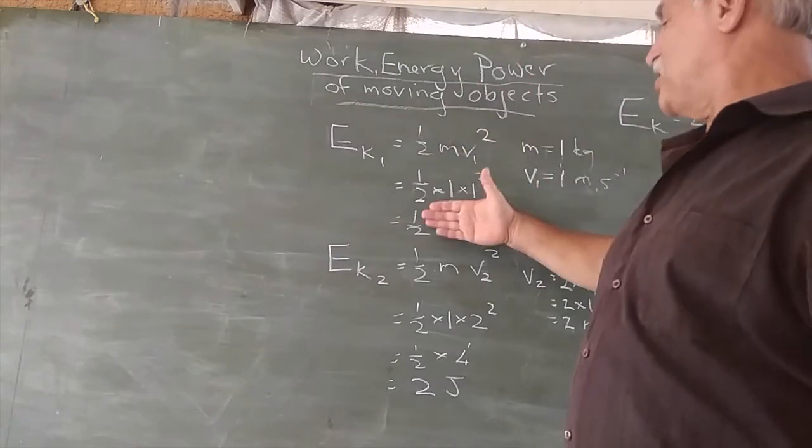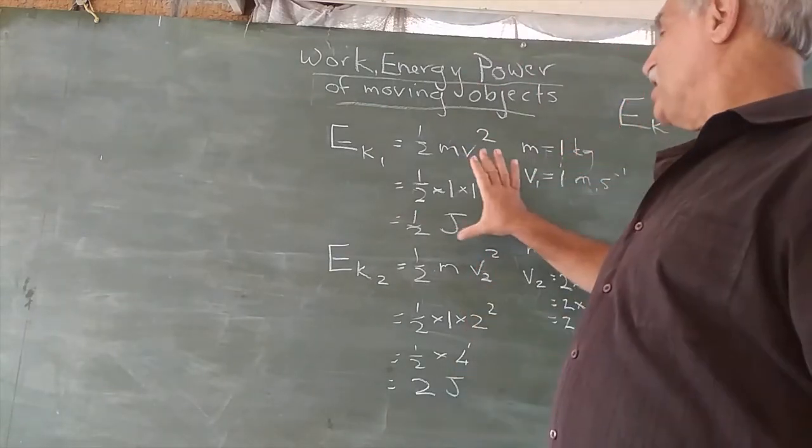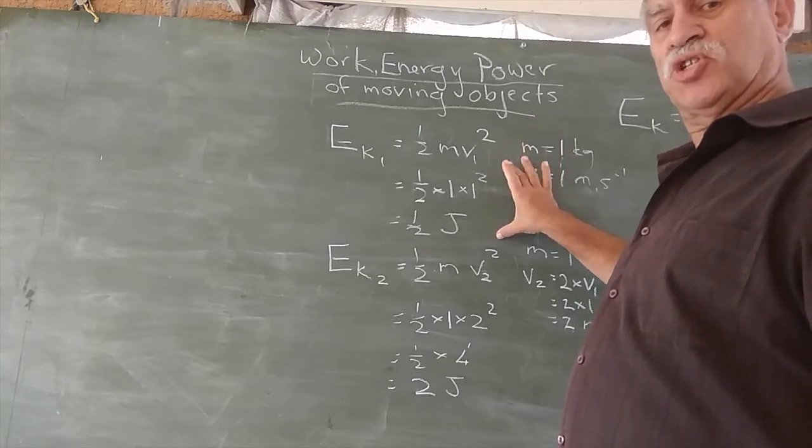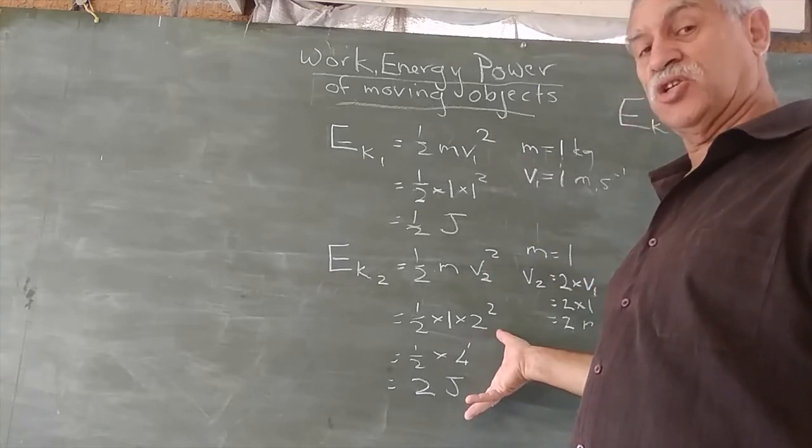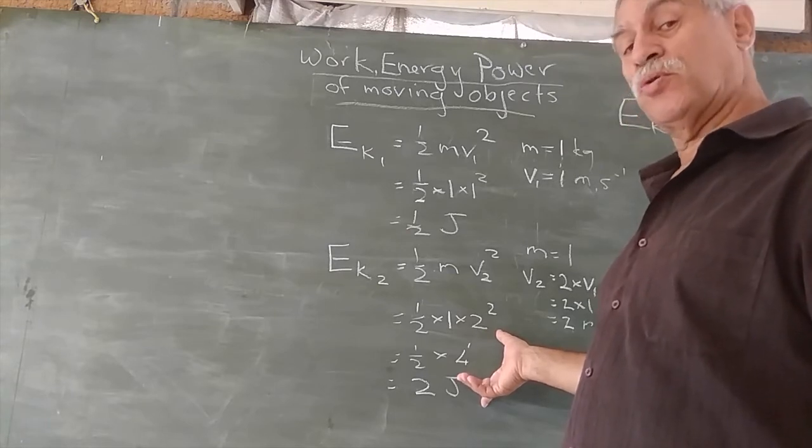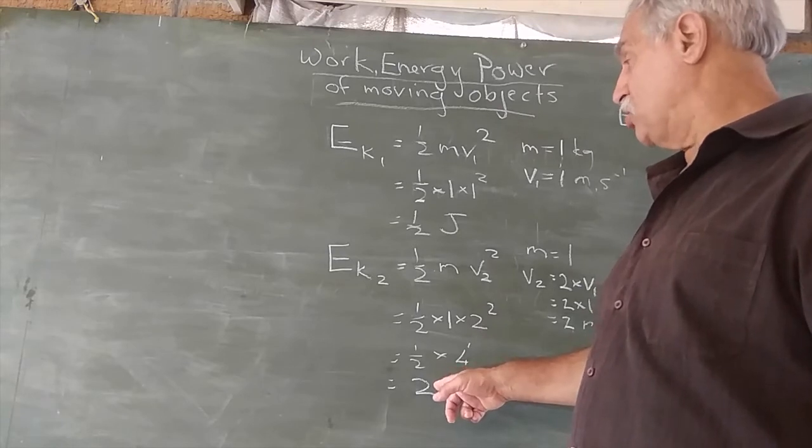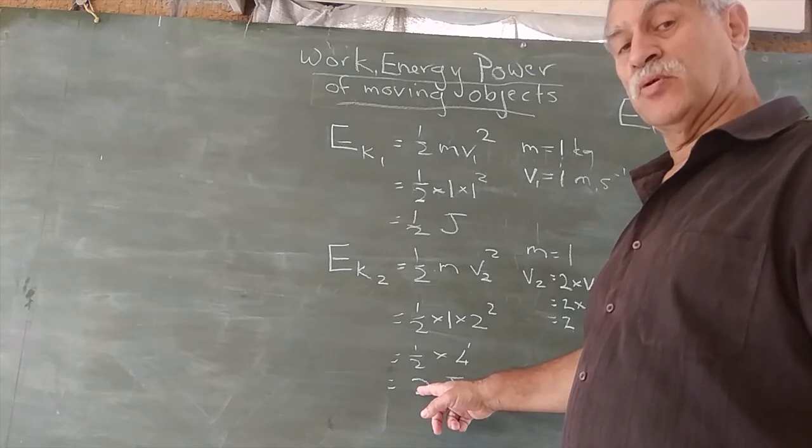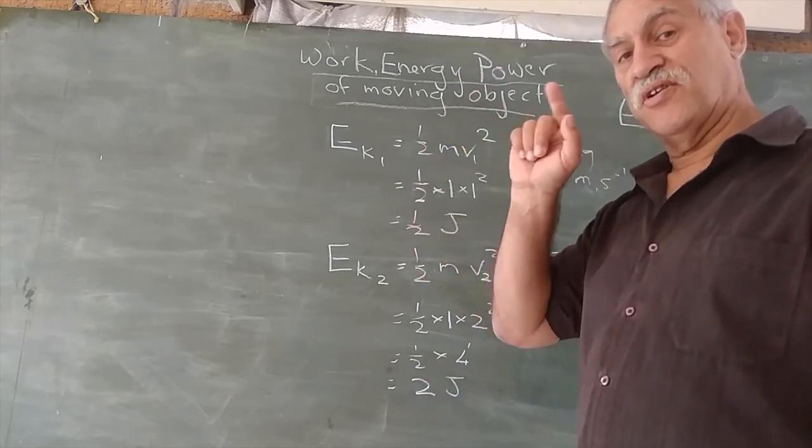Now, let's suppose you've worked it out like this. This is how they'll phrase the question: if in the first case the energy was W, what will the energy be in the second case? Will it be 1W, 2W, 3W, or 4W? You're going to look at that and say, if W is 1/2, then 2 represents 4W. So you'll choose the answer 4W.